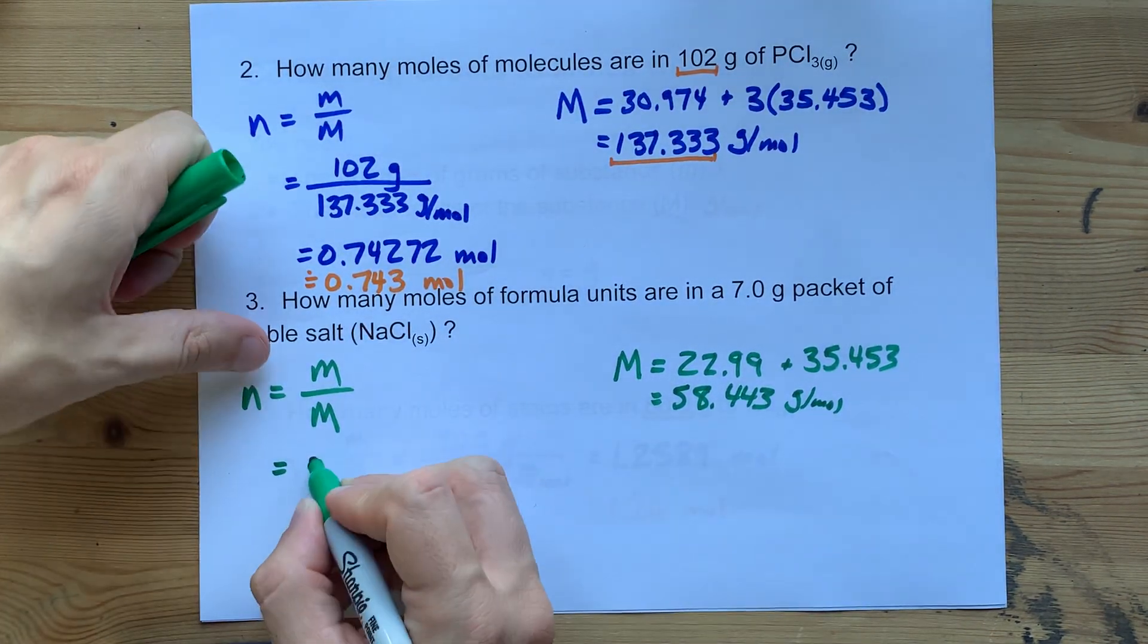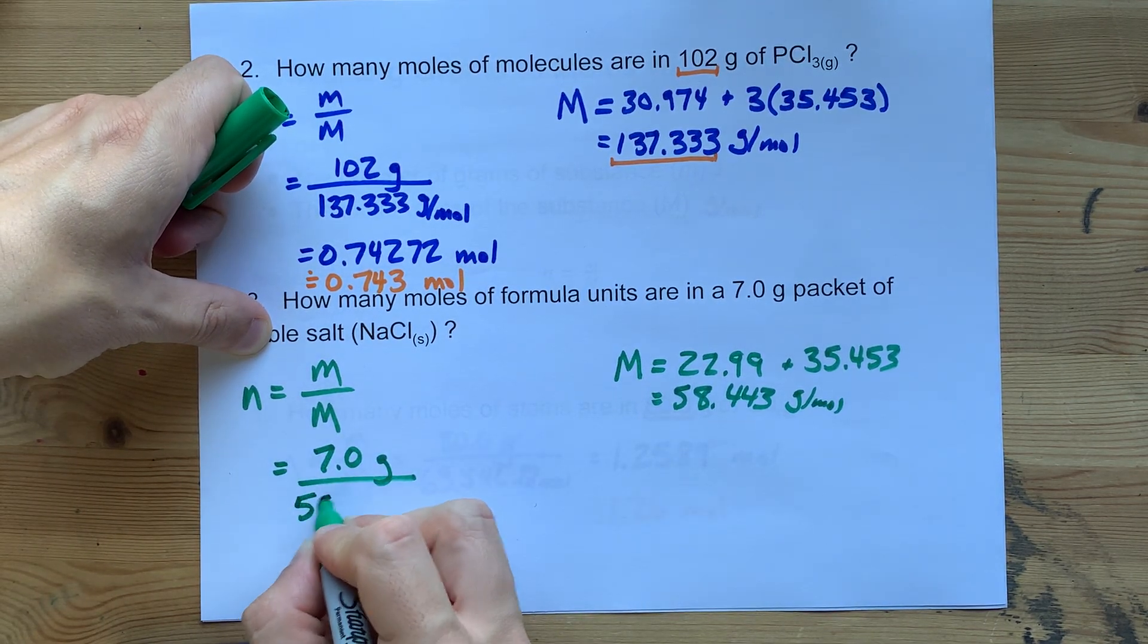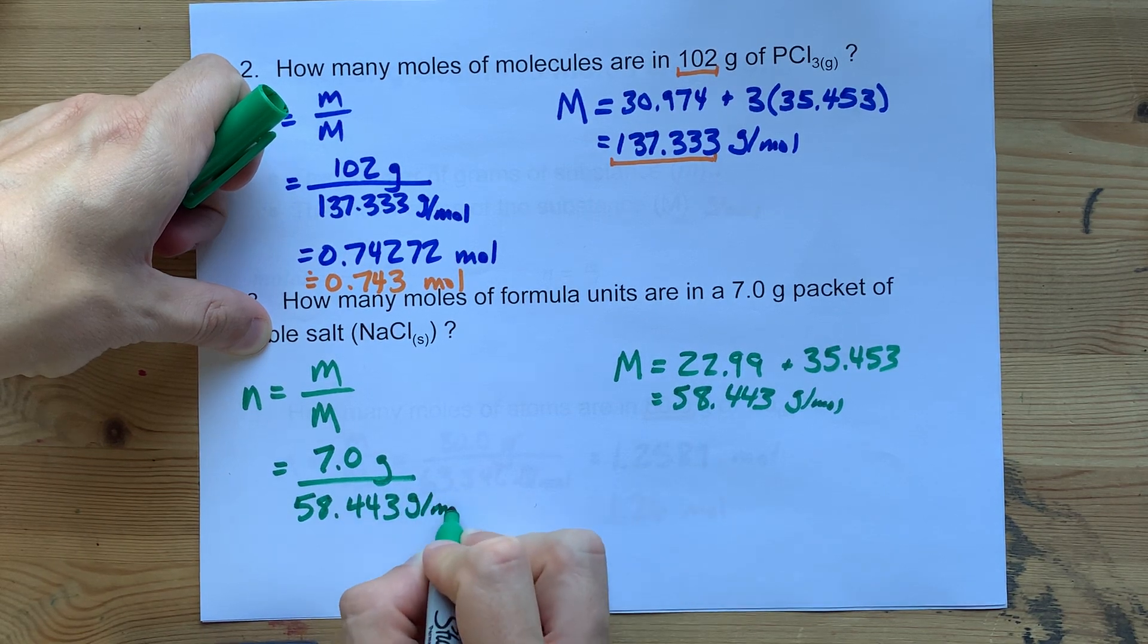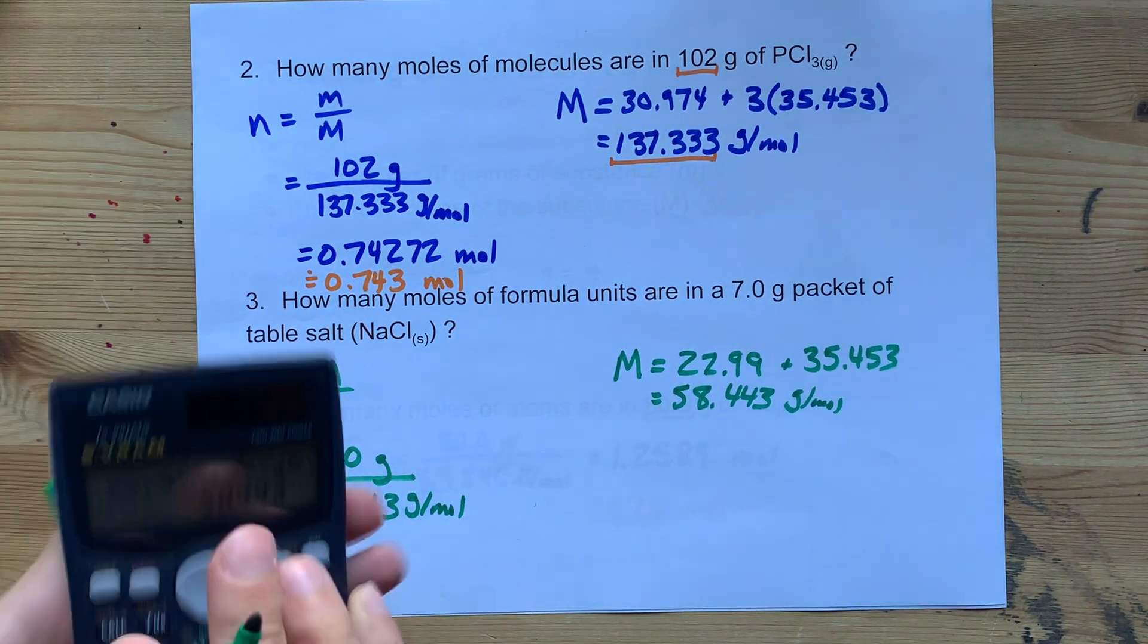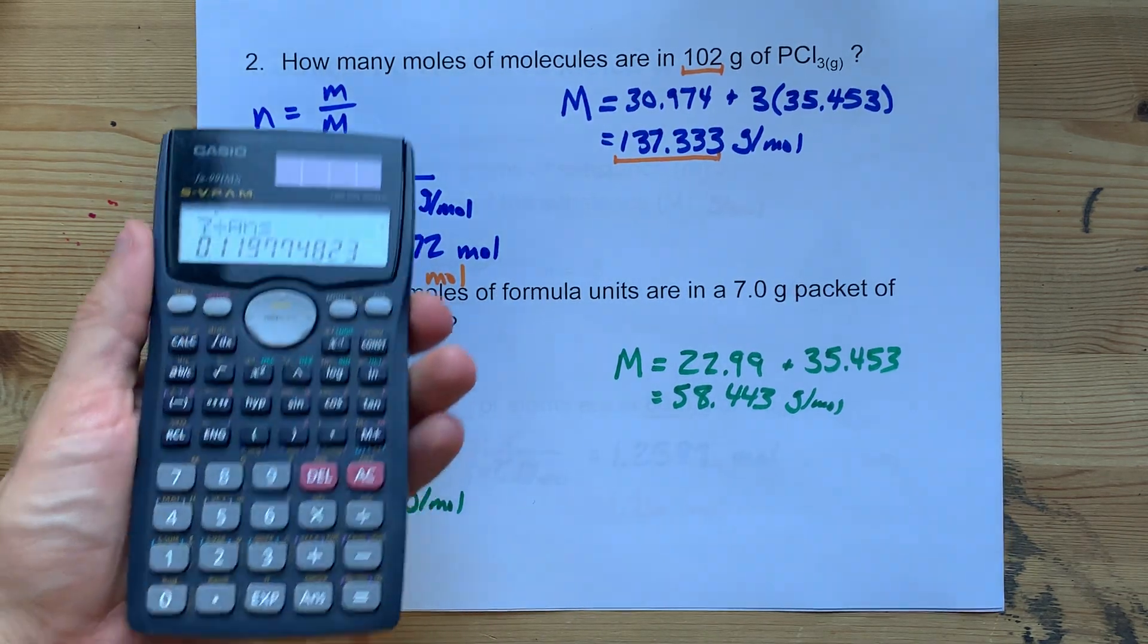So the number of moles is the number of grams you were given divided by the molar mass, 58.443 grams per mole. On the calculator, that's 7 divided by the answer I got.